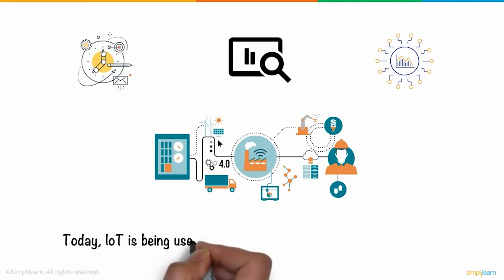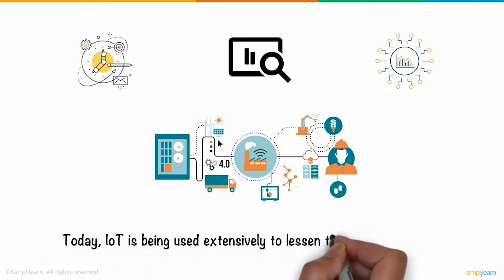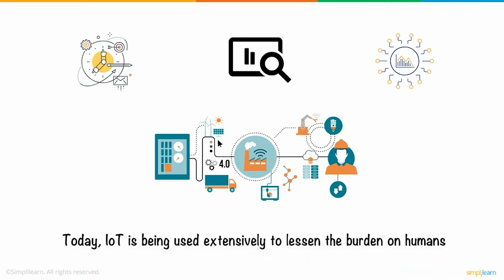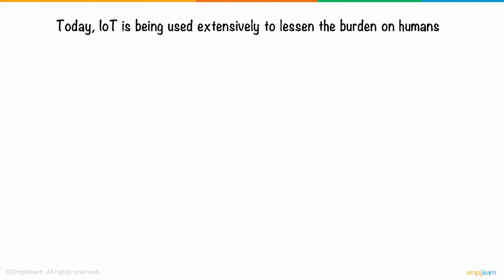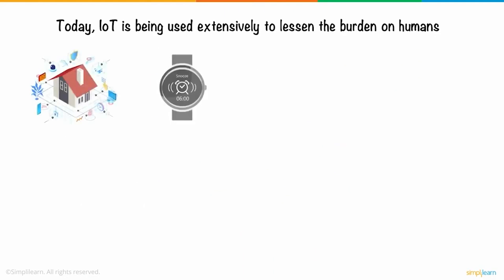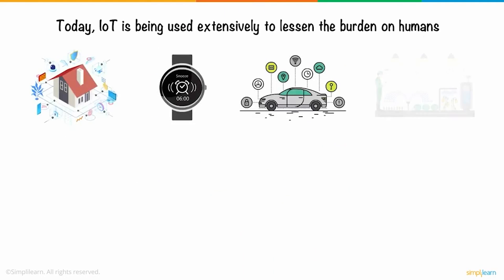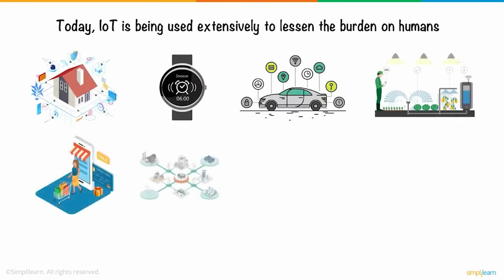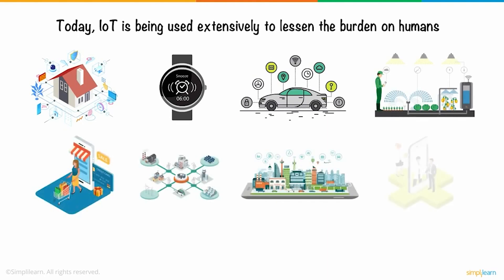Today, IoT is being used extensively to lessen the burden on humans. To name a few, IoT is deployed for smart homes, wearables — watches and bracelets — smart cars, smart farming, smart retail, smart grids, smart city, and smart healthcare.